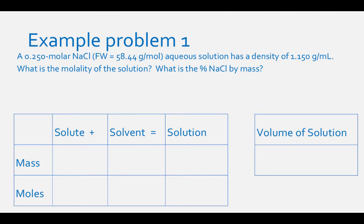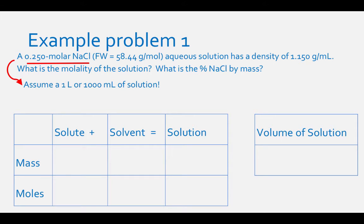A 0.250 molar aqueous solution of NaCl with a formula weight of 58.44 g/mol has a density of 1.150 g/mL. What is the molality and the percent NaCl by mass? Since we have a 0.250 molar solution, assume 1 liter (1,000 mL) of solution, giving us 0.250 moles of NaCl solute. Let's fill in the table with what we know.